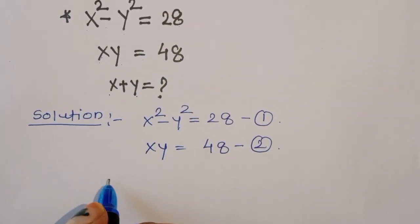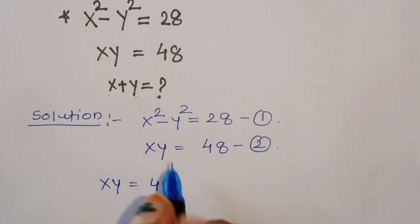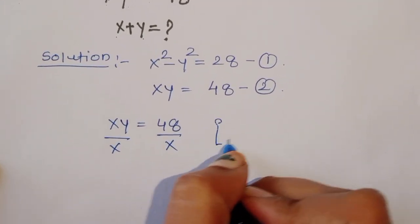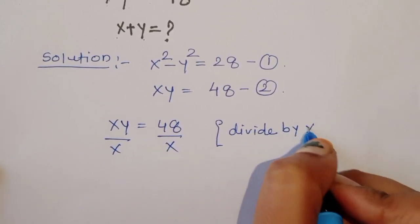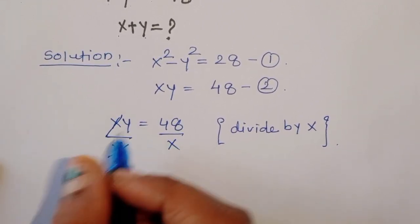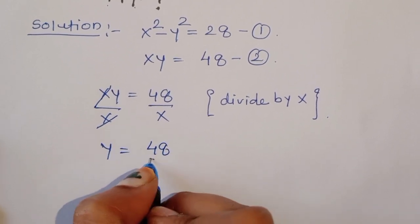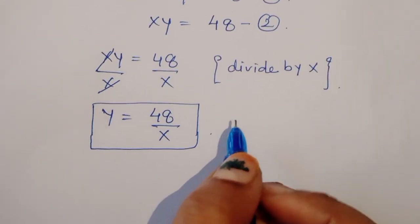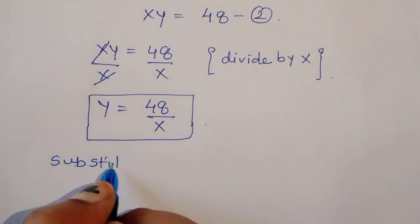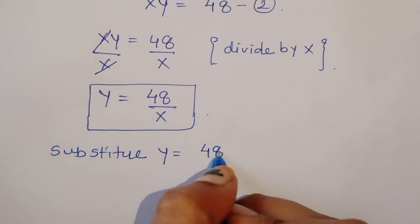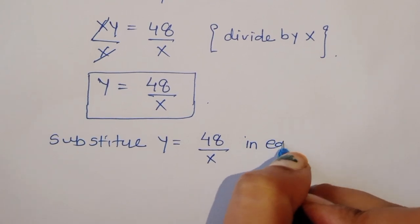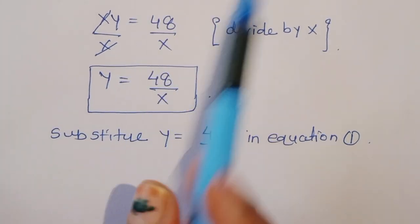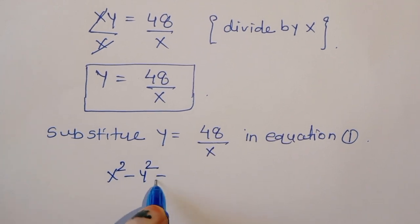From equation 2, xy = 48, we divide both sides by x. This cancels x on the left, giving us y = 48/x. This is the value of y. Now we can substitute y = 48/x into equation 1, which is x² - y² = 28.